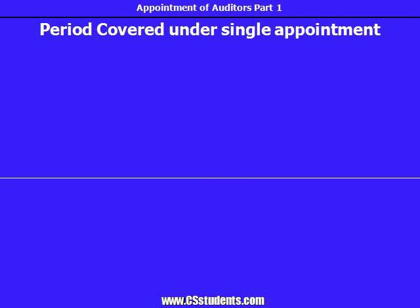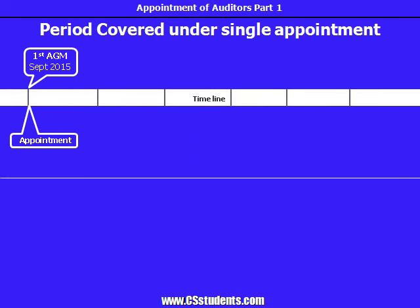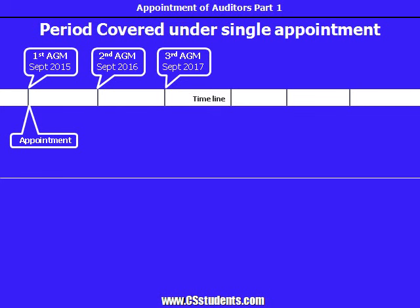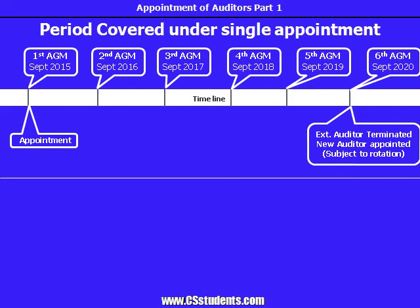Let's see how many financial years are covered under this period. For example, if the first annual general meeting of the company held on September 30, 2015, then the second AGM would be sometime in September 2016, third in September 2017, fourth in September 2018, fifth in 2019, and the sixth AGM would be sometime in September 2020. As per Section 139, in this sixth AGM, the auditor's appointment will be terminated, and the members will have to appoint the same or some other auditor, subject to the rotation requirements.